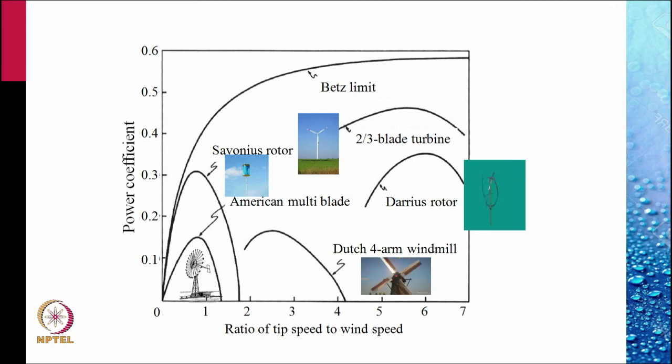This diagram shows you the power coefficients plotted against the tip speed ratio, the ratio of the tip speed to wind speed. The top curve is the Betz limit, the maximum efficiency that you can obtain.